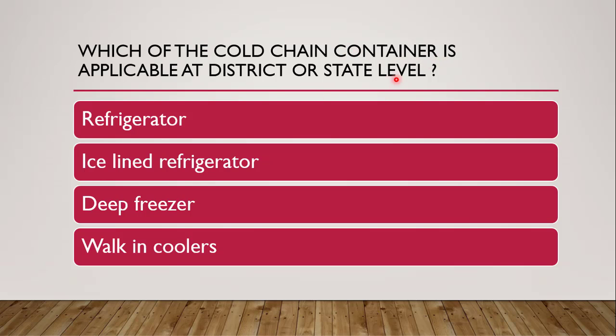Next question: which cold chain container is applicable at district or state level? Cold chain containers are specifically used for maintenance of the temperature of vaccines and immunological products. The cold chain system involves storage of vaccines from the point of manufacture to the point of administration. The containers used for maintaining this temperature are known as cold chain containers.